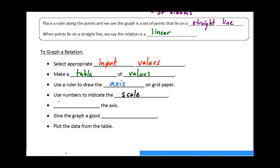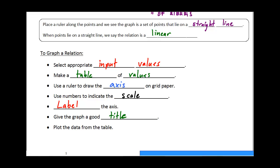Next up, we're going to use numbers to indicate the scale, and it's really important that we don't forget to label our axes. Okay, then we just give the graph a good title, and then we can actually go ahead and start to create our graph.